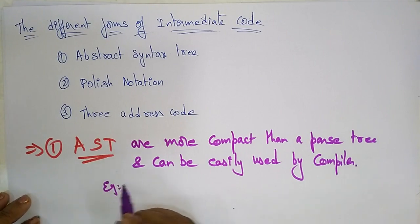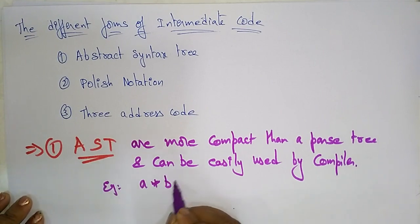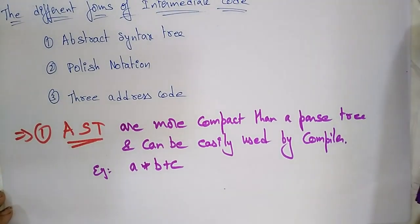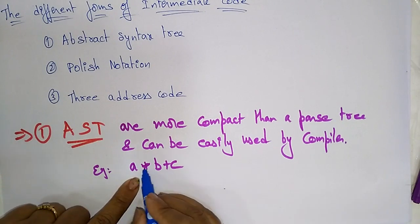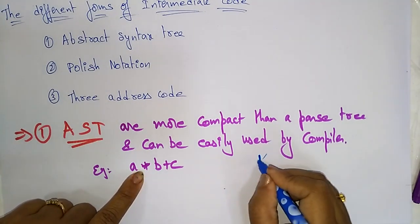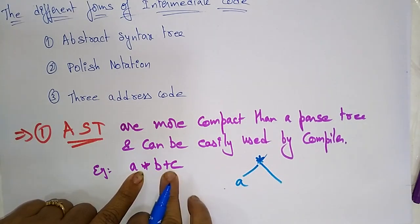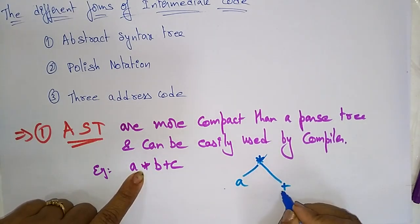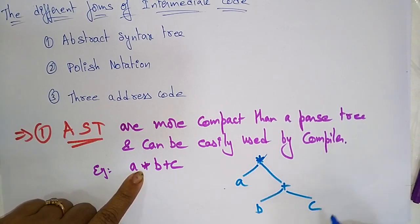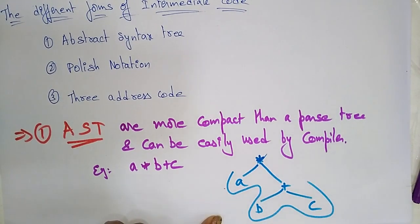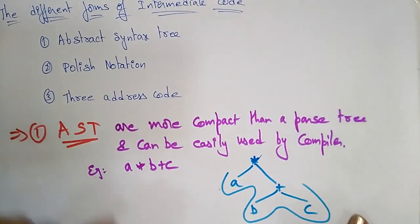Let's take a simple example for this abstract syntax tree. The example I'll take is a star b plus c. This is an expression. I'm going to represent this expression — star is having the highest precedence, so just take star with a, and then b plus c where plus is the operator and b and c are the operands. This is a representation of a parse tree.